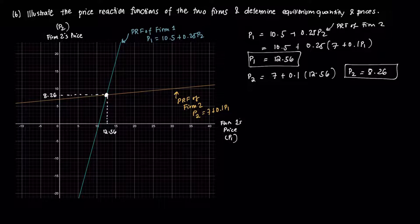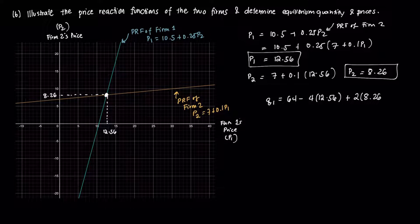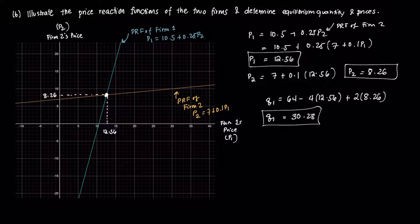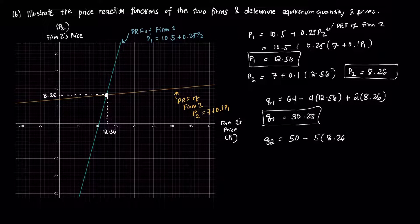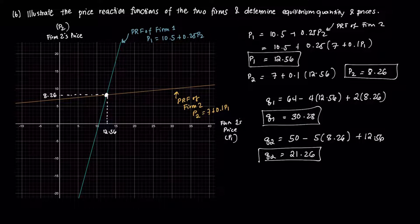To find equilibrium output, plug the equilibrium prices back into the demand functions. Q1 = 64 − 4(12.56) + 2(8.26) = 30.28, so firm 1 supplies 30.28 units. Q2 = 50 + 12.56 − 5(8.26) = 21.26, so firm 2 supplies 21.26 units.